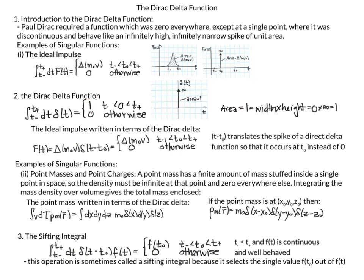Generally, our area is width times height. We said the spike was infinitely narrow, so our width is zero, and our height is infinity. So zero times infinity equals one, which is a strange thing to say, but we'll approach this in our next video to justify this unusual definition.